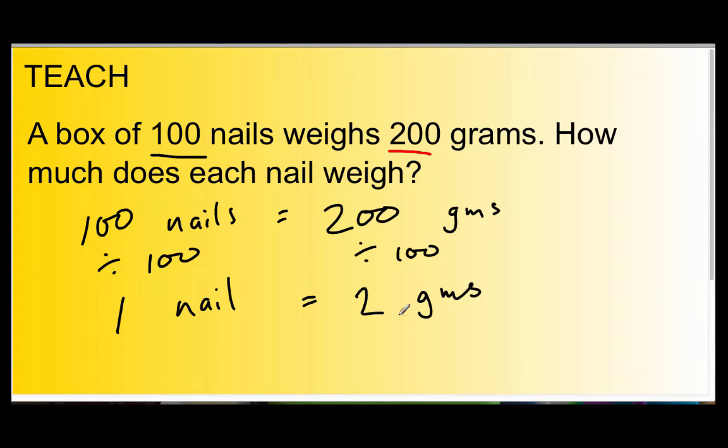So, 1 nail equals 2 grams. Please, rewind that if you're not sure about that. All I've divided is the 100 nails by 100 to get 1 nail. And then I divided 200 grams by 100 to get 2 grams. And why did I know to divide by 100? Well, I chose to divide by 100 because that is this figure here. And I think that should help you.